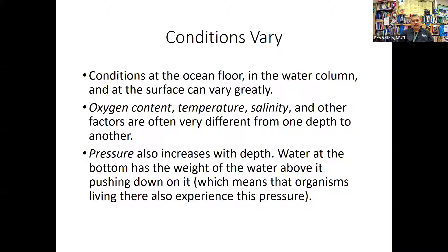Conditions vary in the ocean. We have the ocean floor, the water column, and the surface — different zones that differ in the amount of gases they contain, average temperature trends, dissolved mineral content, and nutrient richness. Whether water is nutrient-rich or clear and devoid of nutrients are important properties that differ across ocean zones.